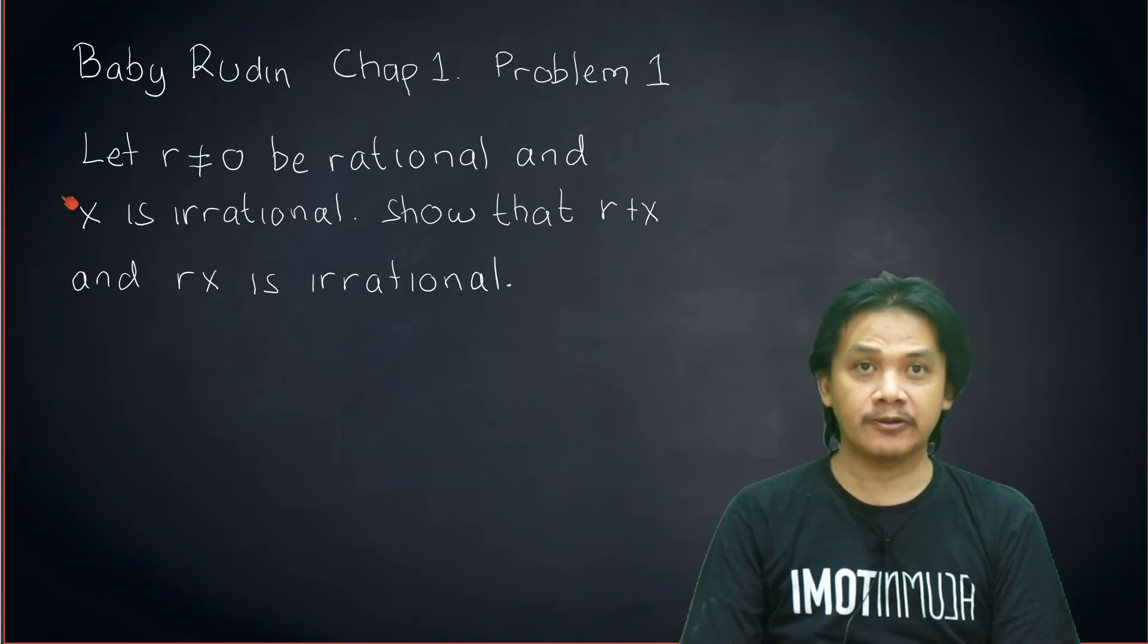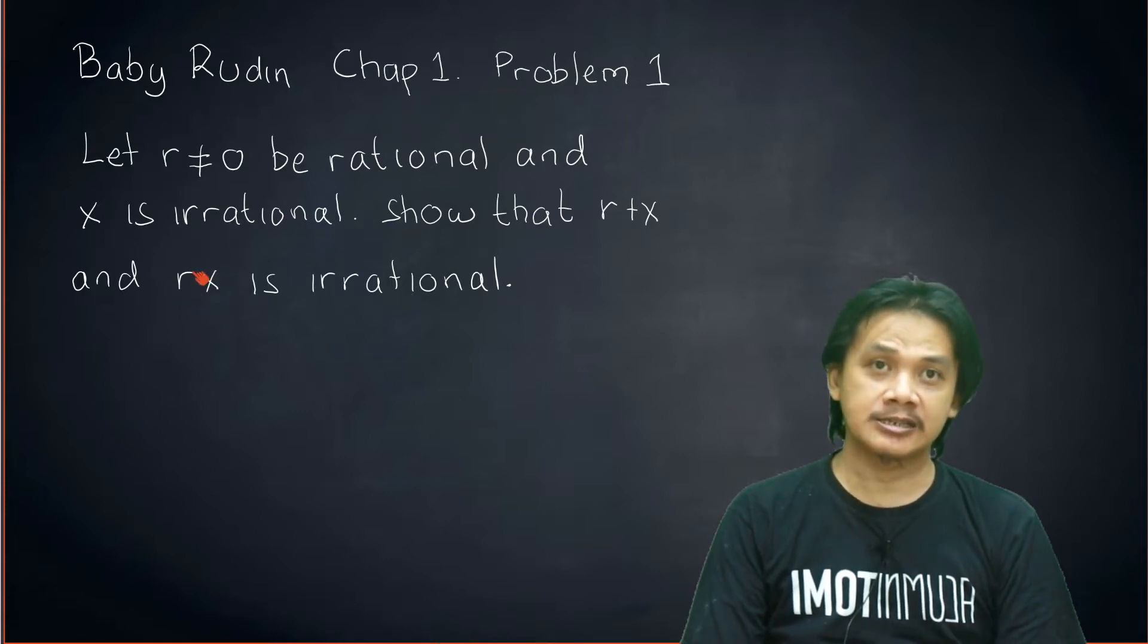So the problem goes as follows. Let r be a non-zero rational number and x is irrational. And we would like to show that r+x and r×x is irrational.